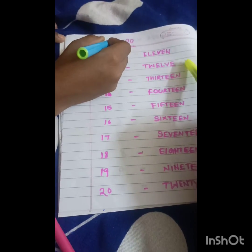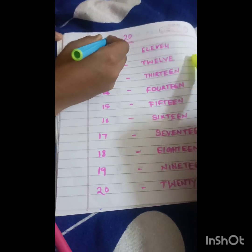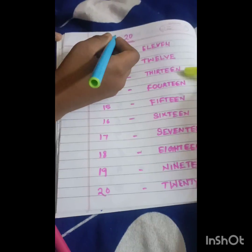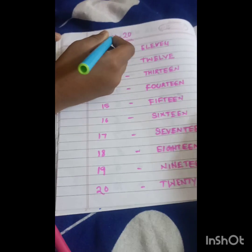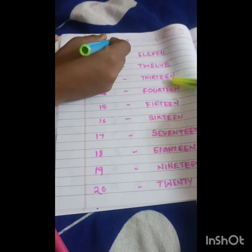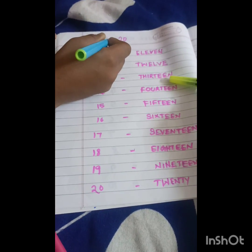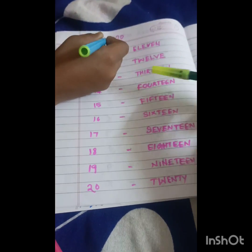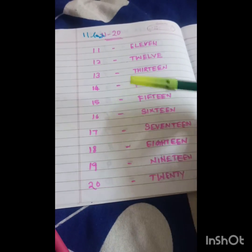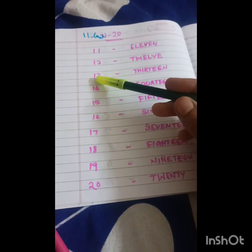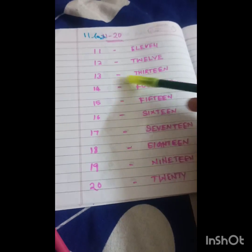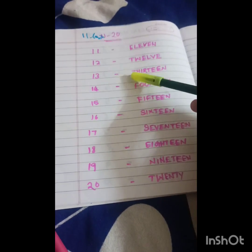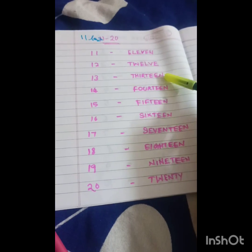Only these two numbers will differ in spelling. For all other numbers, you should add teen at last. So everyone will say the teenage will begin from 13 to 19. That's why the spelling of 13 is thirteen.